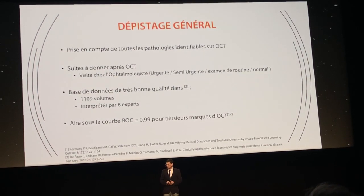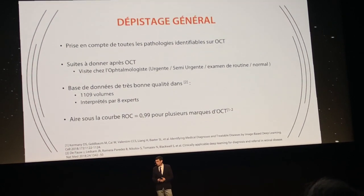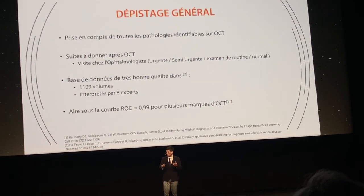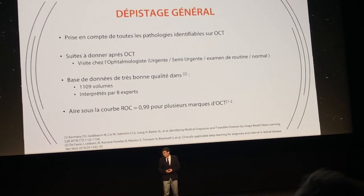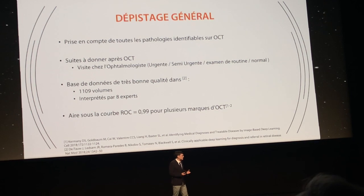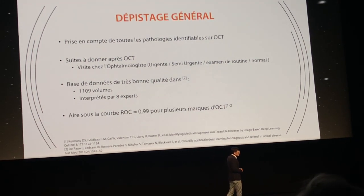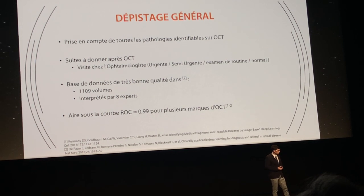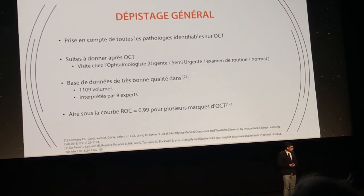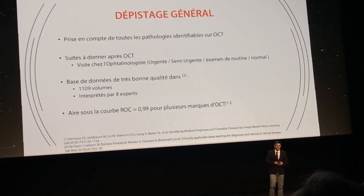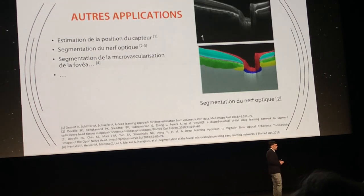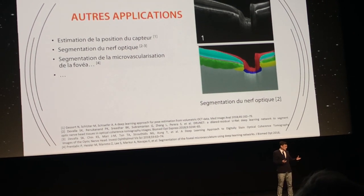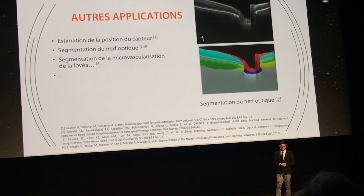There is also the theme of general screening — taking into account all pathologies identifiable on an OCT — to tell a patient whether they need to see an ophthalmologist urgently, semi-urgently, for routine examination, or not at all because their exam is normal. Using very high-quality databases of only 1,000 volumes but interpreted by 8 experts, the AUC on the ROC curve is 0.99 — nearly perfect classification. Other applications in the literature include estimation of sensor position, optic nerve segmentation, and segmentation of foveal microvasculature, though these remain more marginal.